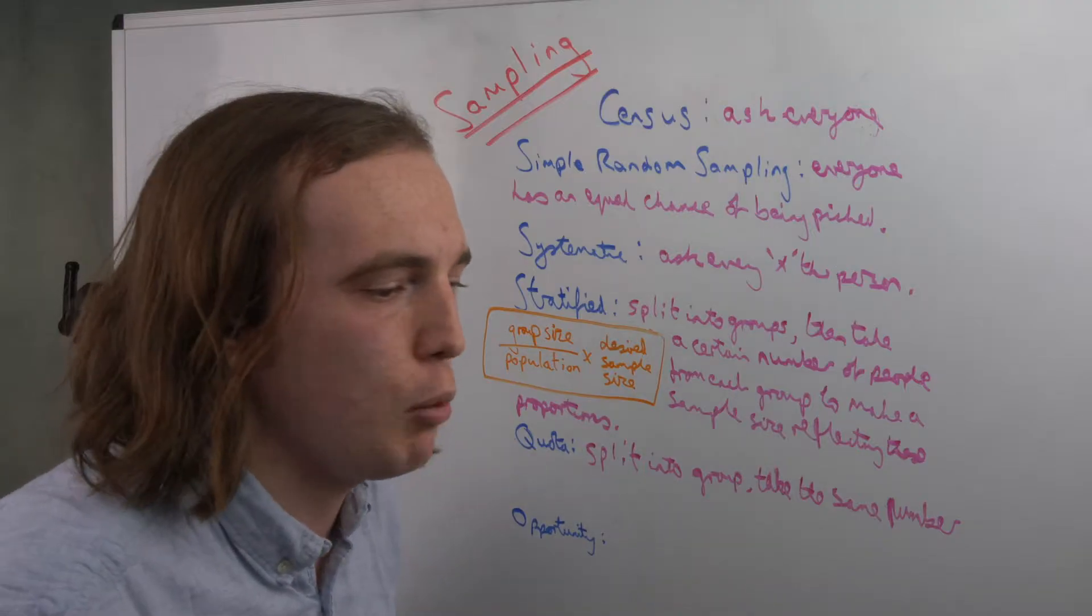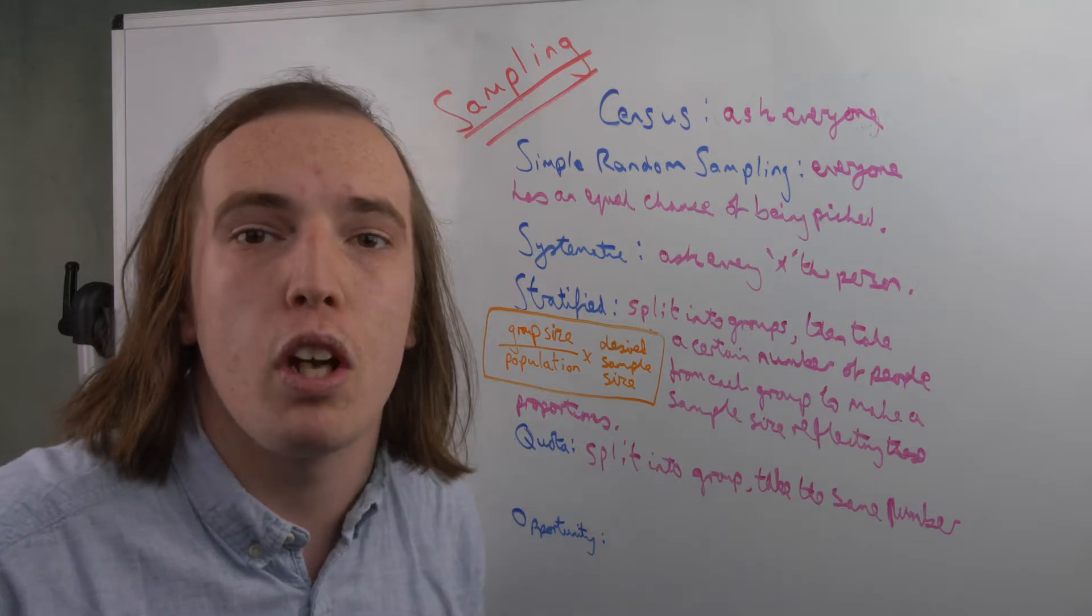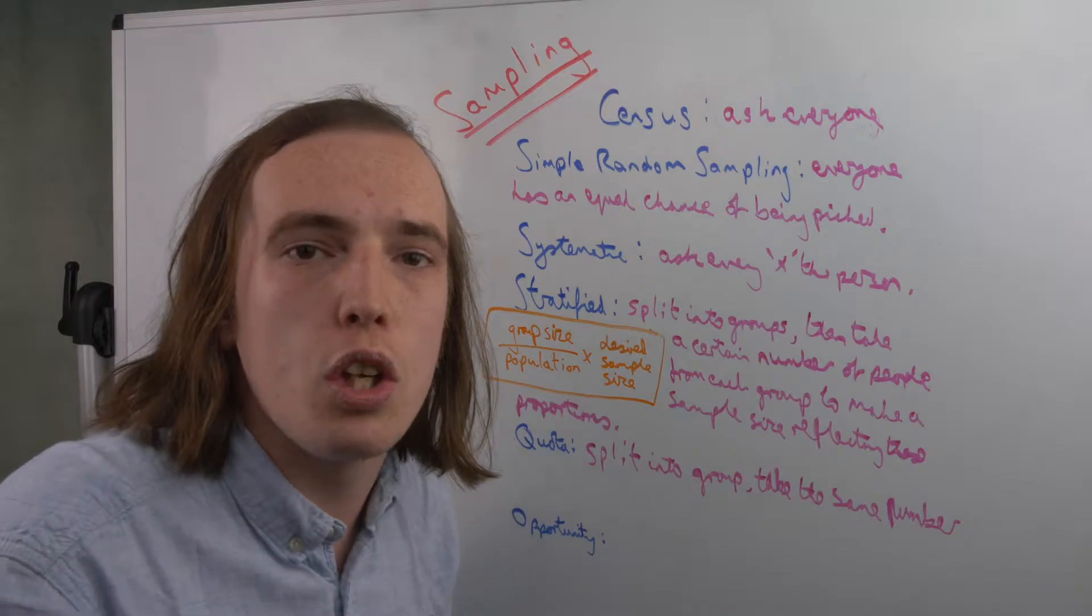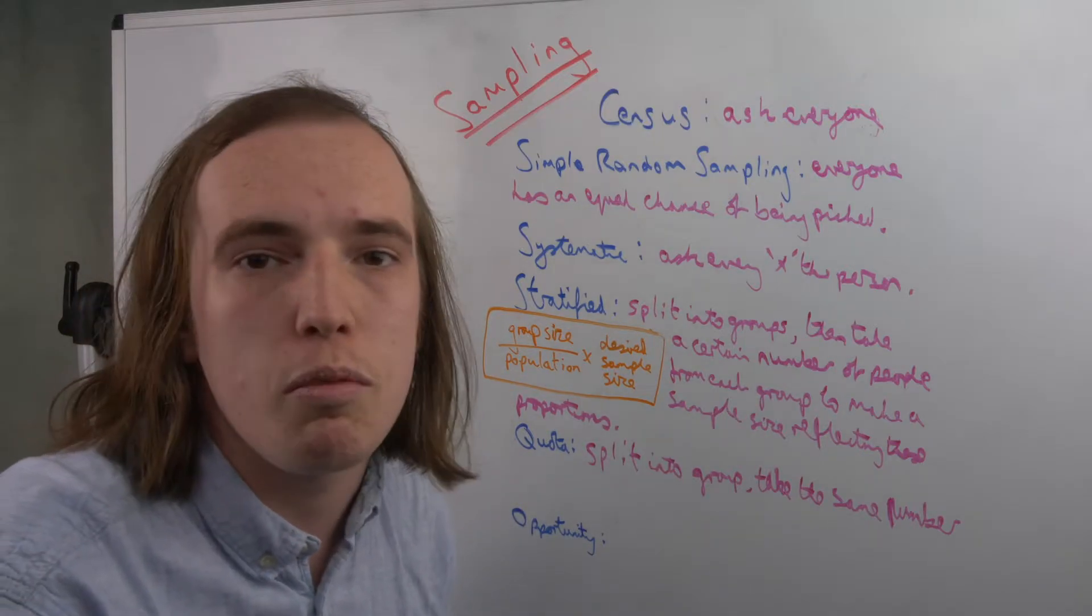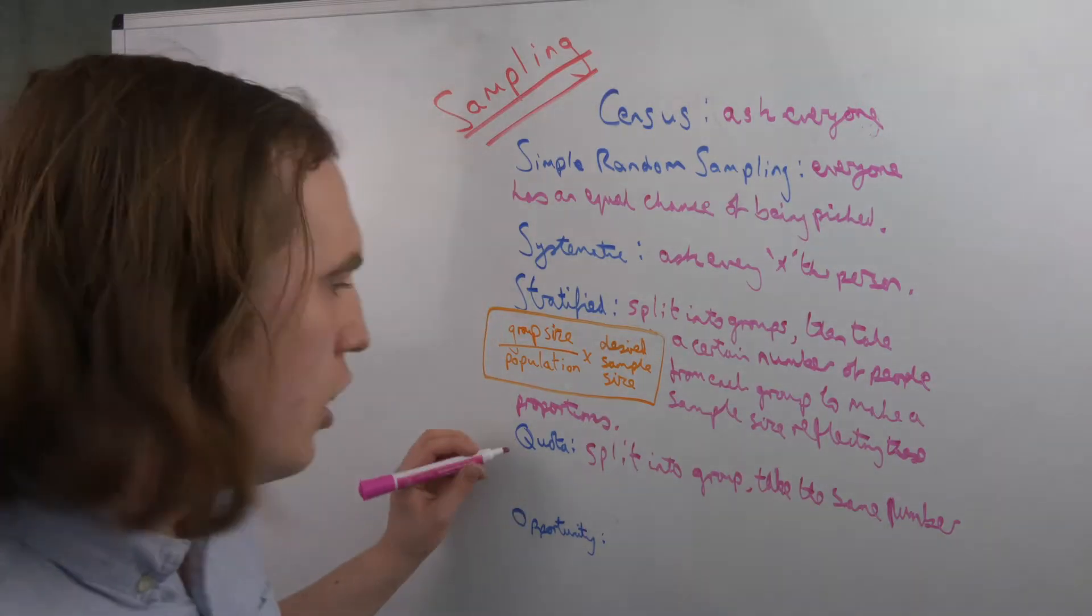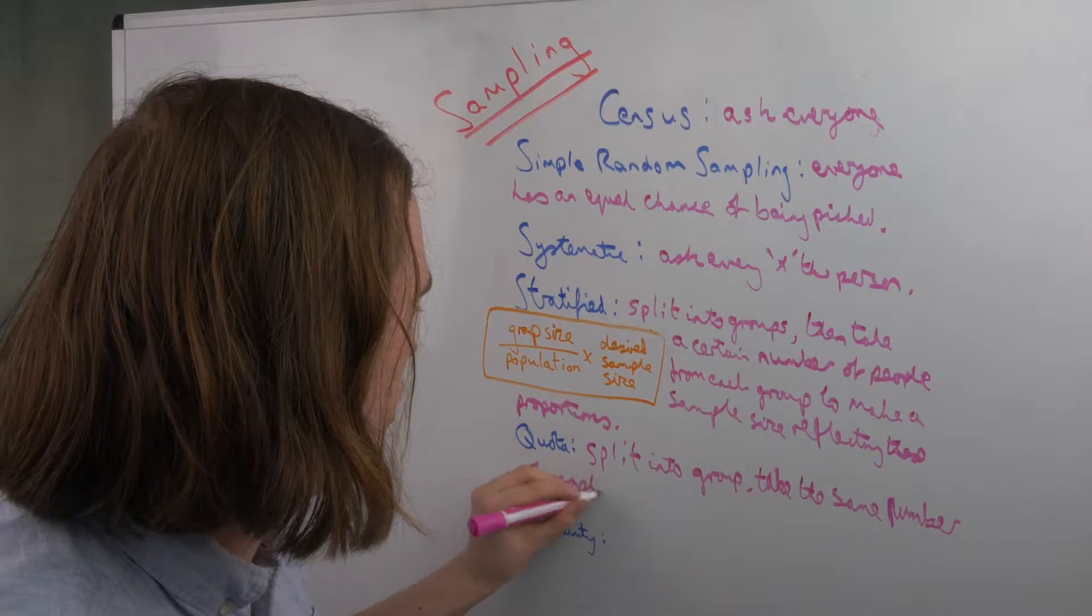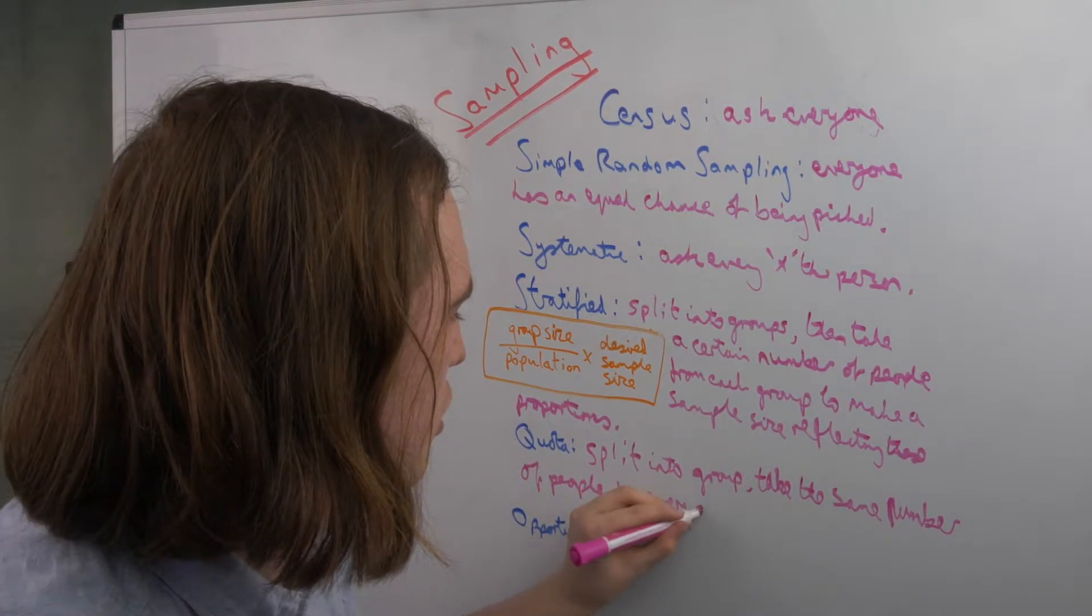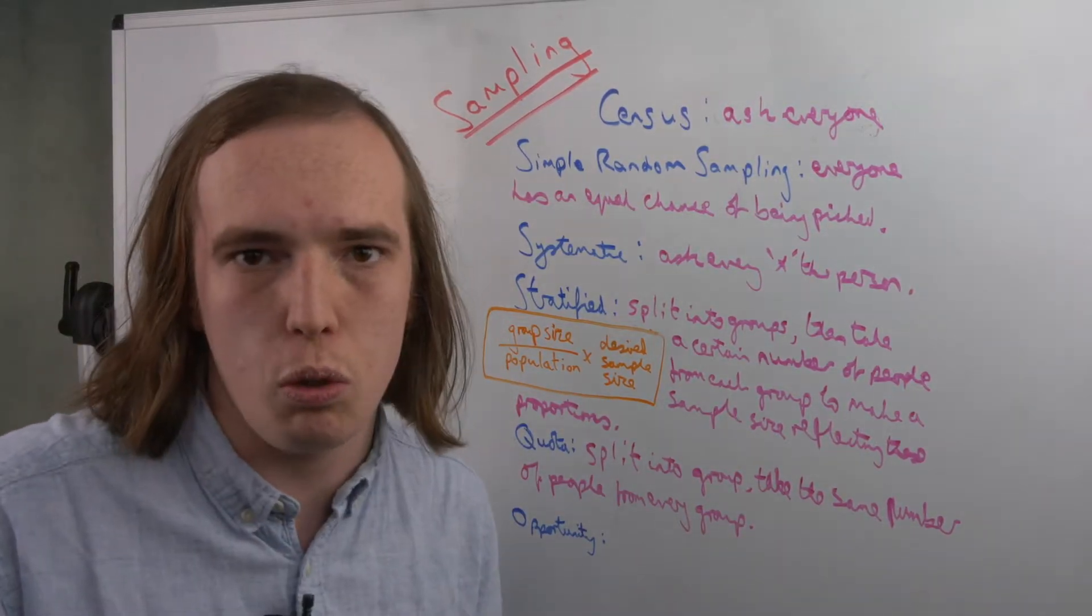So again, if you were splitting it up by—let's use something else, let's say height—you would have the same number of people in your sample size who were between five foot and six foot as you would between four foot and five foot and so on. So same number of people from every group, and that gives you equal representation in your quota.